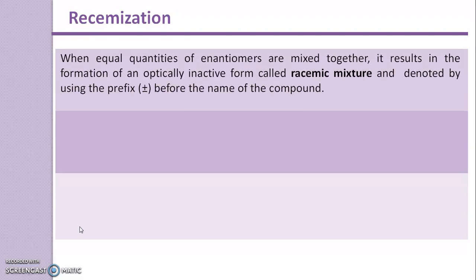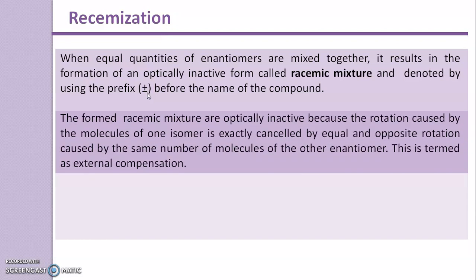When equal quantities of enantiomers are mixed together, it results in the formation of an optically inactive form called a racemic mixture, which is denoted by using the prefix plus-minus before the name of the compound. Racemic mixtures are optically inactive, meaning they don't rotate plane polarized light, because the rotation caused by the molecules of one isomer is exactly cancelled by equal and opposite rotation caused by the same number of molecules of the other enantiomer. This mechanism is termed external compensation.